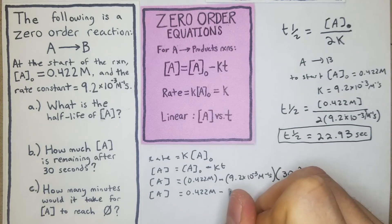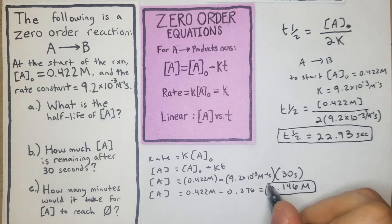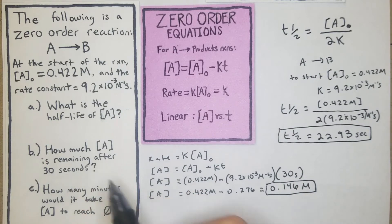0.422 M minus 0.276 is equal to 0.146 M. So we just calculated what we're going to have, the concentration of A after 30 seconds.